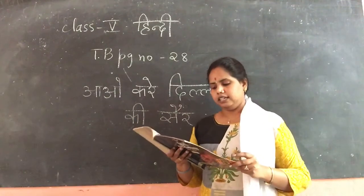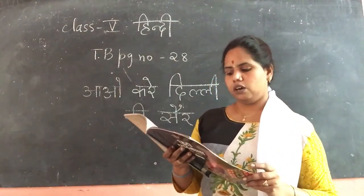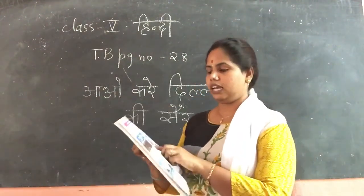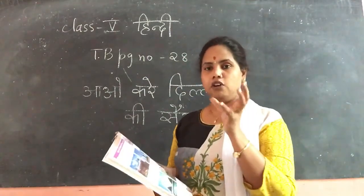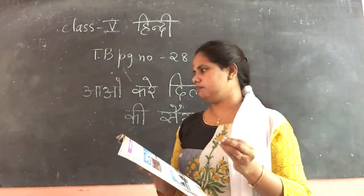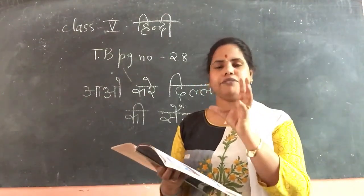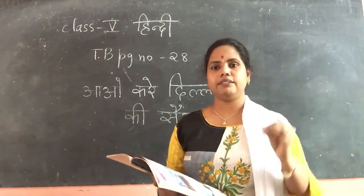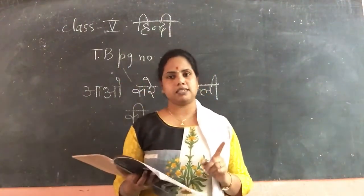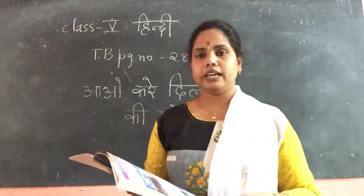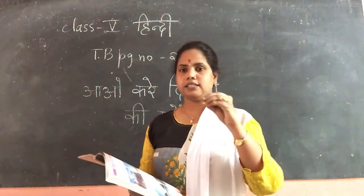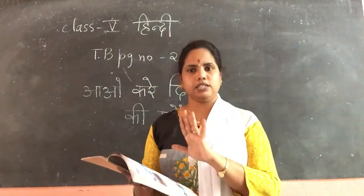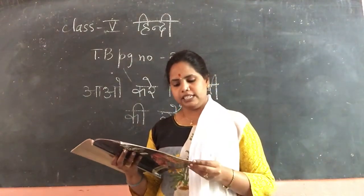Next is Qutub Minar. Here we can see an iron pillar. Iron normally gets rusted due to the moisture present in the air. But here in Qutub Minar, the iron pillar — whatever it is made up of — till today it has not rusted at all.